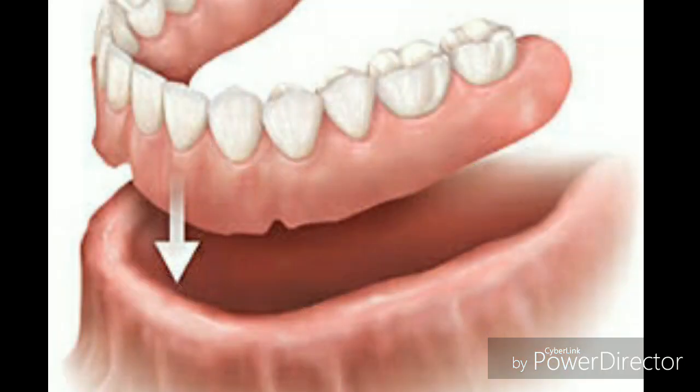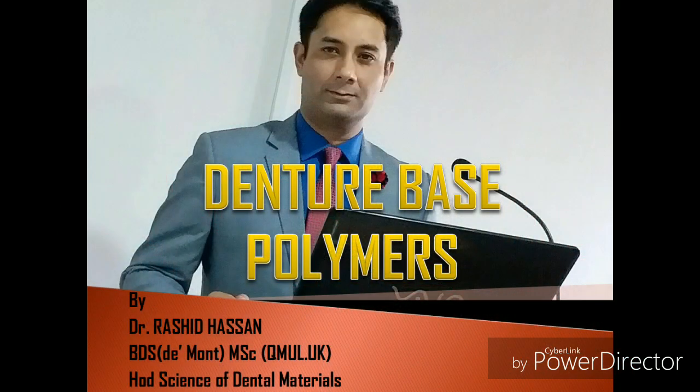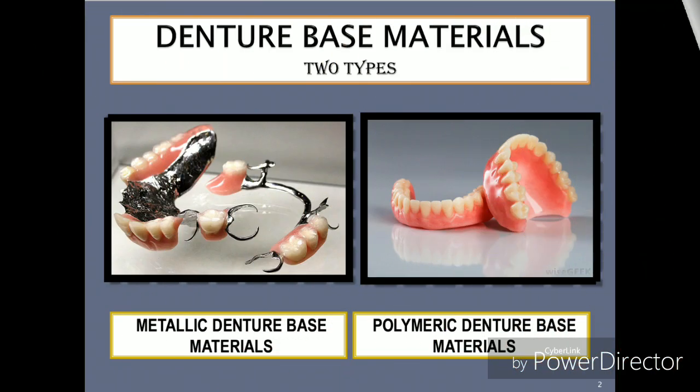The denture base is that part of the denture which rests on the soft tissues and does not include the artificial teeth. There are two types of materials used as denture base materials: number one, metallic denture base materials, and number two, polymeric denture base materials. In this lecture, I'm going to discuss polymeric denture base materials. For the lecture on metallic denture base materials, you are referred to my previous lecture on base metal casting alloys.